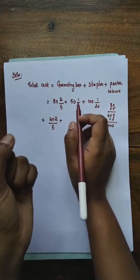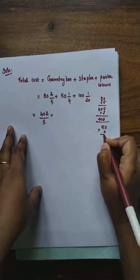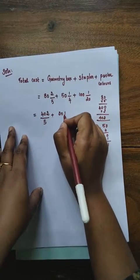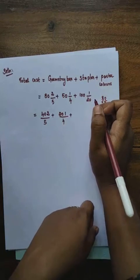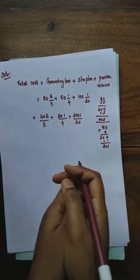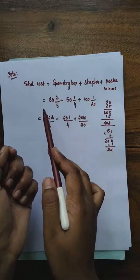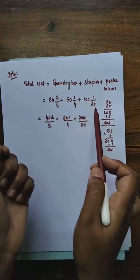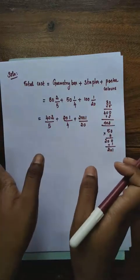For the third term, 101 and 1/20: multiply 100 by 20, which is 2000, then add 1, giving 2001. So we get 2001/20. We have now converted all the mixed fractions into improper fractions: 402/5 + 201/4 + 2001/20. Next we are going to add them. Before adding, we check whether all the denominators are the same.